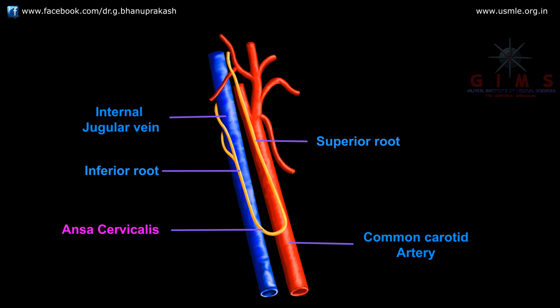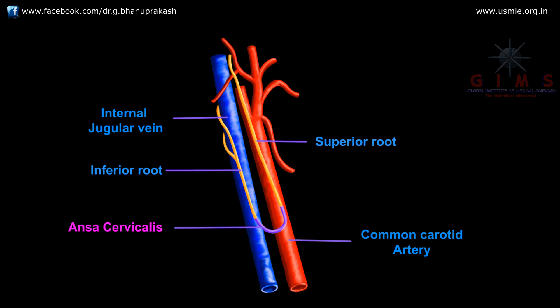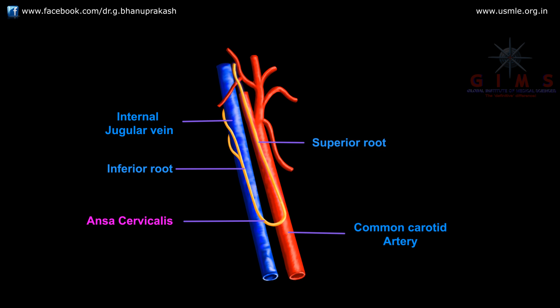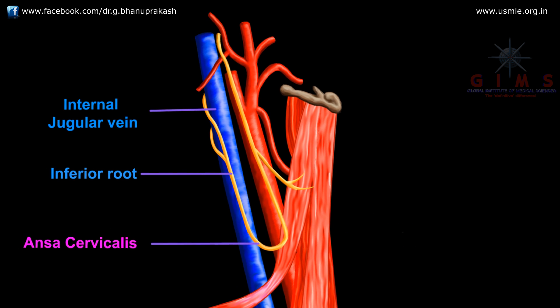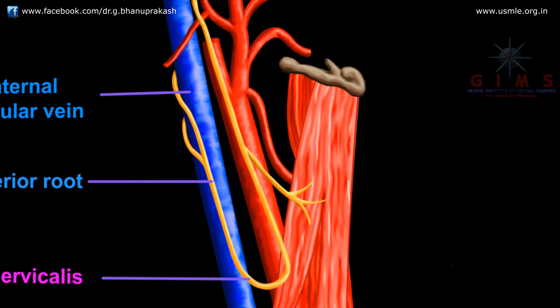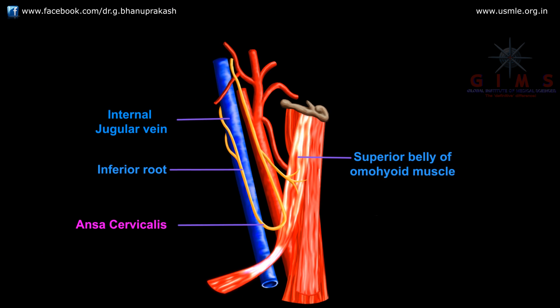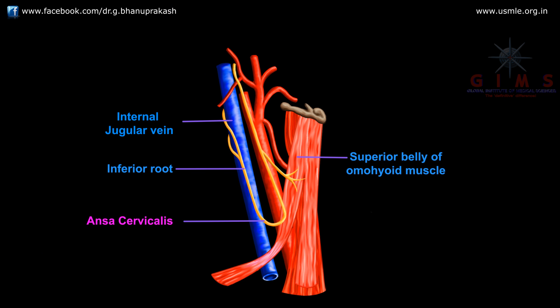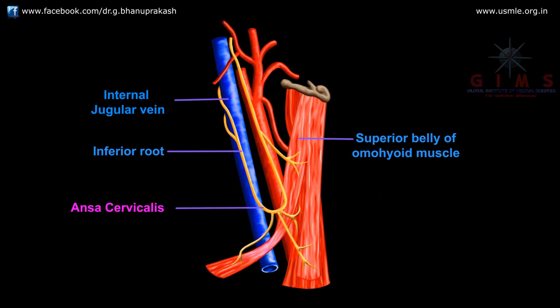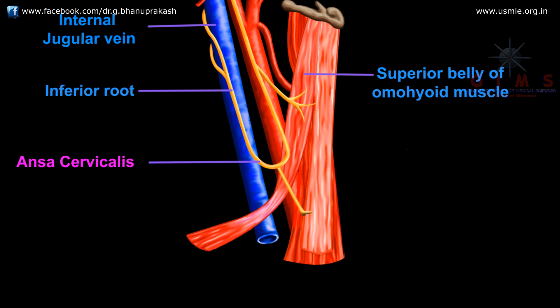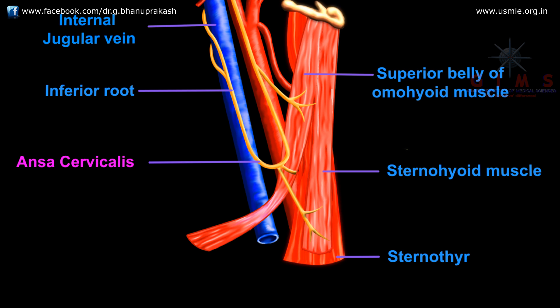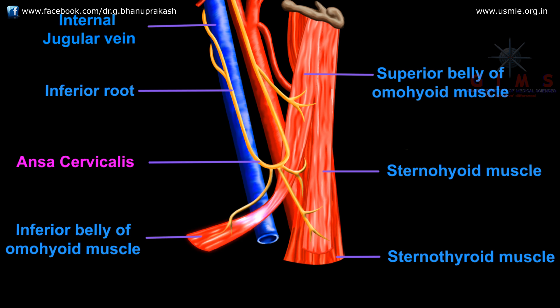Talking about the distribution of the ansa cervicalis: the superior root gives off only one branch, providing innervation to the superior belly of the omohyoid muscle. The loop itself — the ansa cervicalis — gives off three branches to three muscles: sternohyoid, sternothyroid, and the inferior belly of the omohyoid.